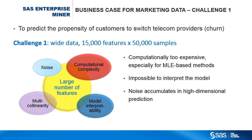Third, noise accumulation in high-dimensional prediction has been recognized as a problem for a long time. In a paper published in 2008, Jianqing Fan claims that classification can be as bad as a random guess due to noise accumulation when the number of features is close to or even larger than the number of observations. And last but not least, multicollinearity is a notorious difficulty when you have a large number of features. Severe multicollinearity can increase the variance of estimates and make them unstable.